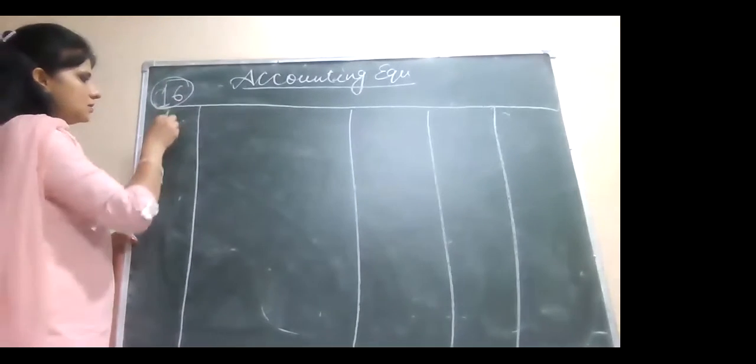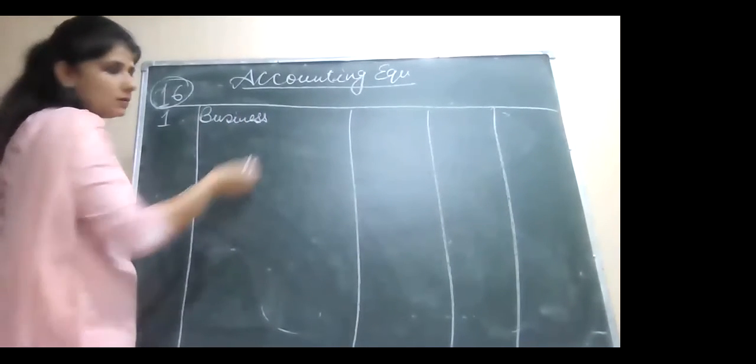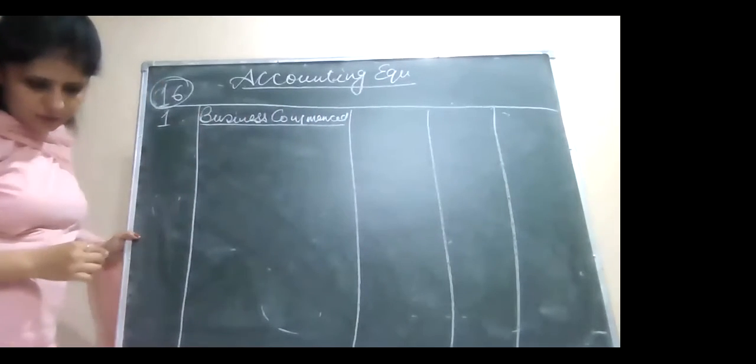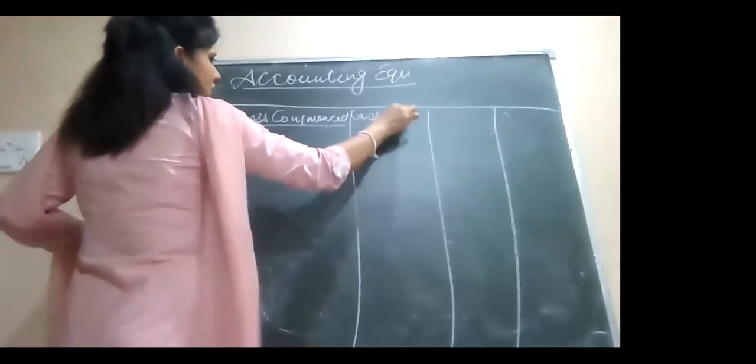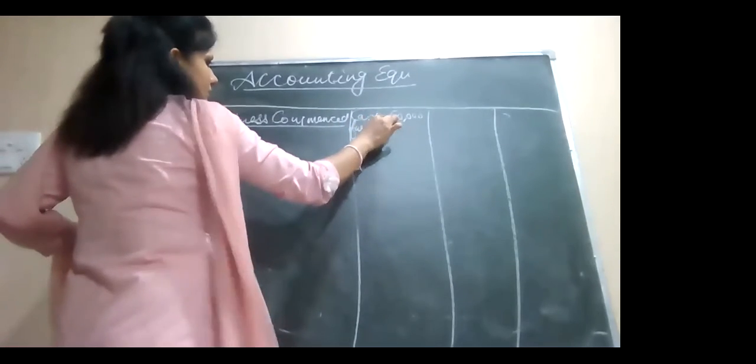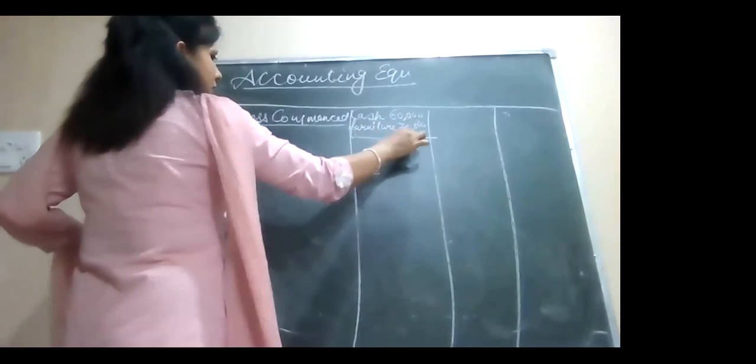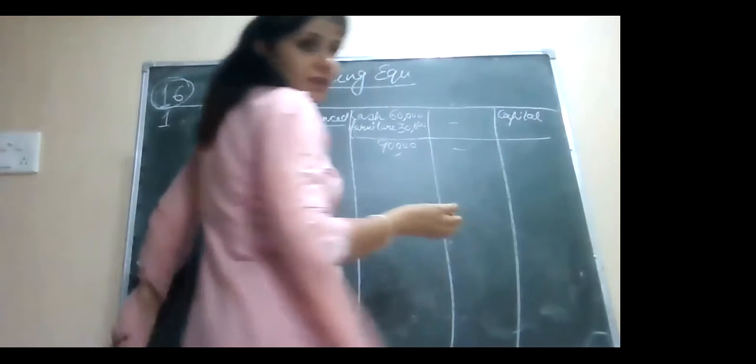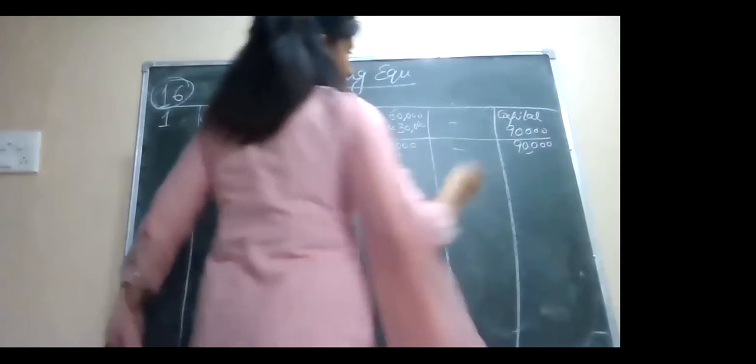Samuel commenced business. In 16th question, first transaction, now it is clear to everyone. Business commenced. What he brought when he commenced business? Cash and furniture. So cash is 60,000, furniture is 30,000. Let's do the total over here. Liability first transaction will benefit. So put the dash over here. Then we have capital, that is students 90,000. Done.